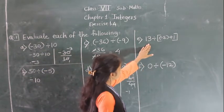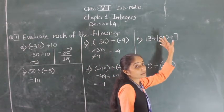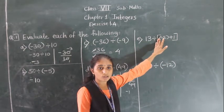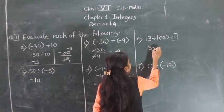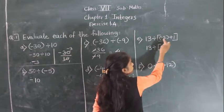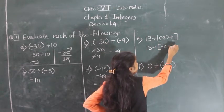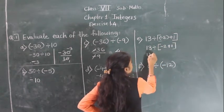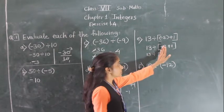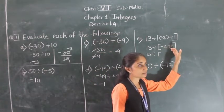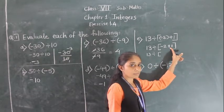Part (e): 13 divided by (minus 2 plus 1). We are going to solve the bracket first. Inside the bracket: minus 2 plus 1. Minus plus gives minus, so we subtract 1 from 2.